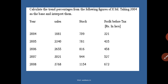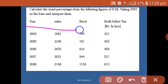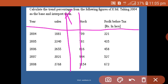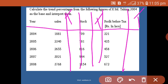I am giving you an example from the examination point of view. Calculate the trend percentage — different years from 2004 to 2008 are given, with details of sales, stock, profit before tax, etc. When we prepare the trend percentage statement, we provide all the data columns and also additional columns for trend percentage.